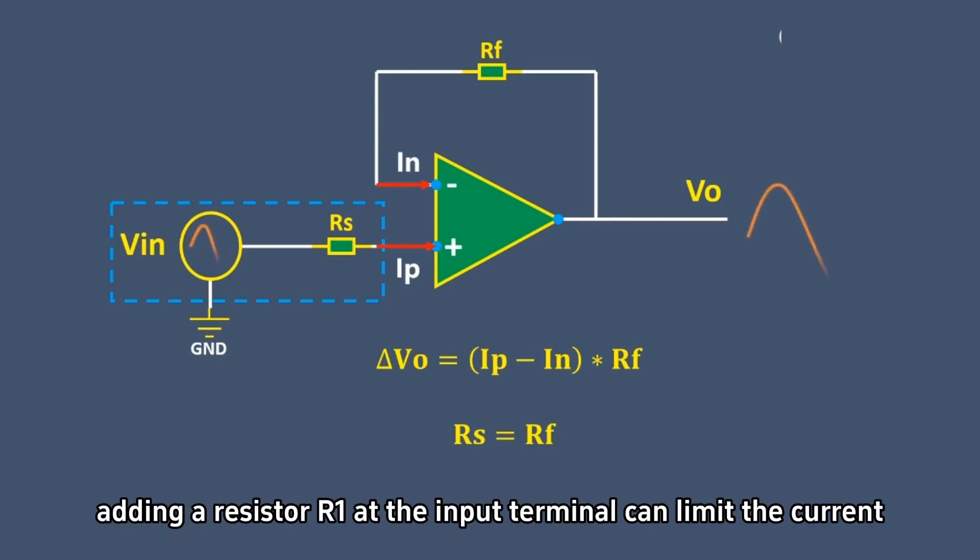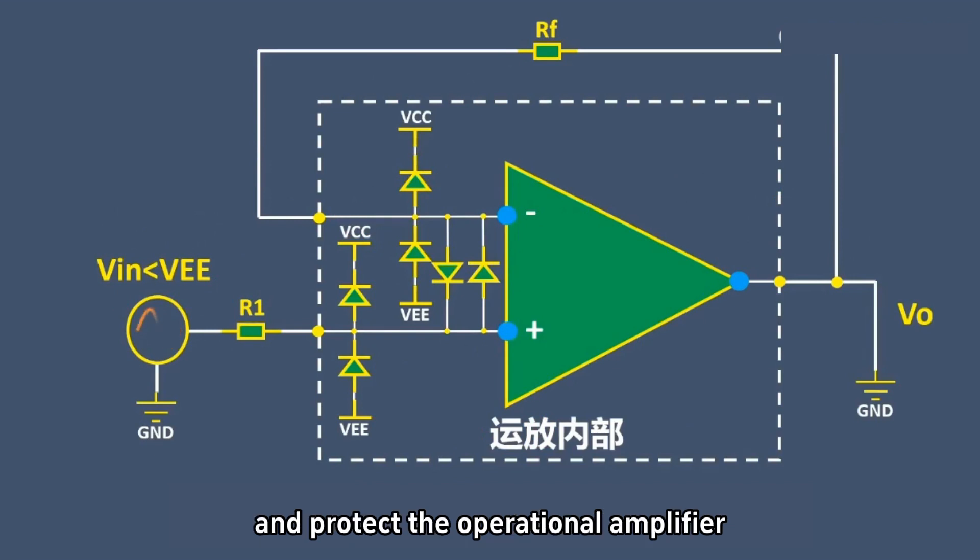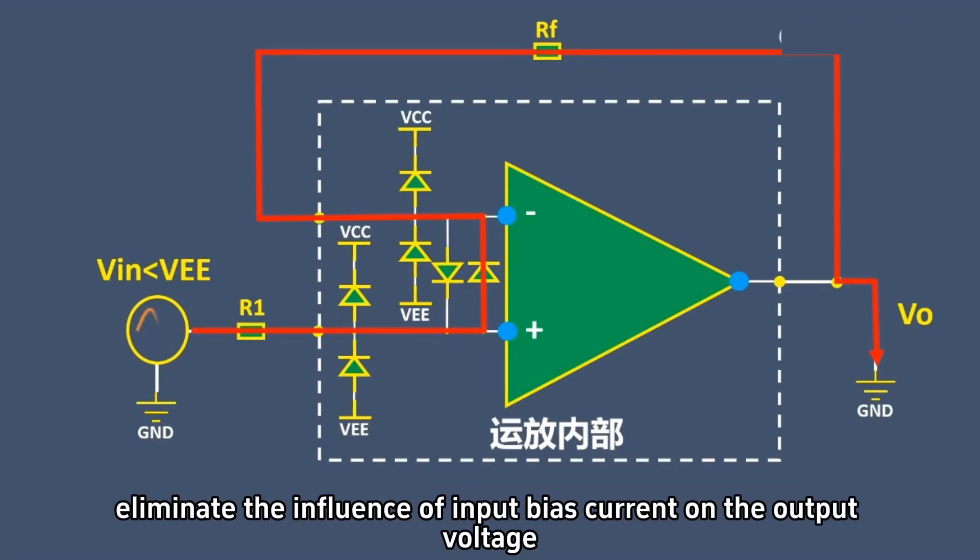Therefore, adding a resistor R1 at the input terminal can limit the current entering the operational amplifier when the protection circuit fails and protect the operational amplifier. The resistor Rf is added to match the resistance of R1 and eliminate the influence of input bias current on the output voltage.